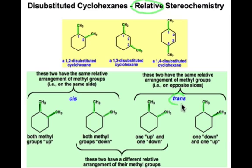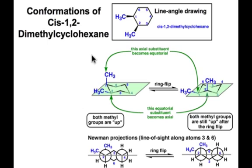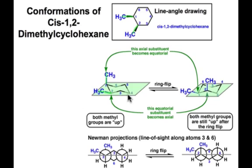Both up or both down are known as cis, and one up, one down are known as trans isomers. Here we illustrate the relationship between the line-angle drawing and the three-dimensional chair forms for cis 1,2-dimethylcyclohexane. In order to have the cis relationship, one methyl group needs to be in the axial conformation and one in the equatorial conformation.